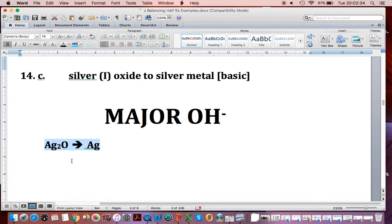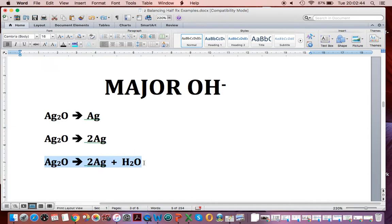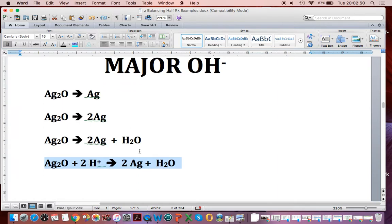We can see our major atom, silver, is imbalanced. So we put a 2 in there. Now the silvers are balanced. Balancing oxygens by adding water. We add one water molecule to the right. Now the O's are balanced. We're going to add H pluses on the left. Two of them.